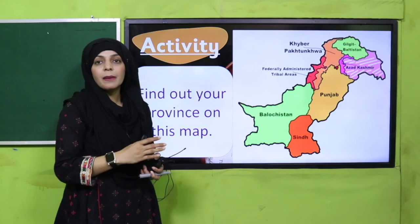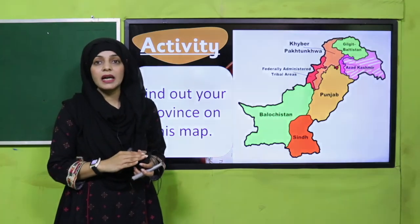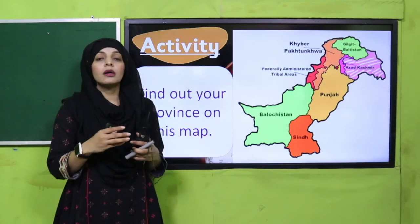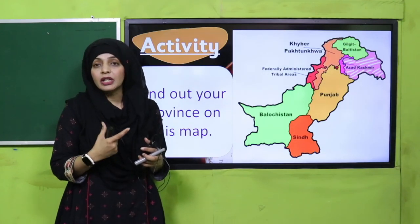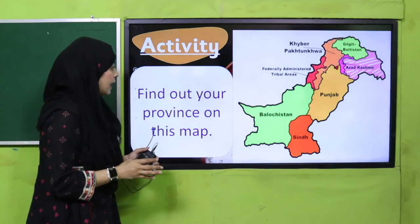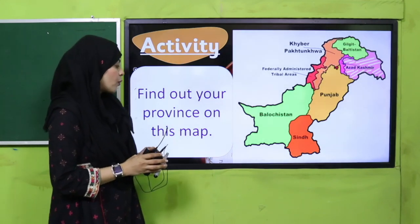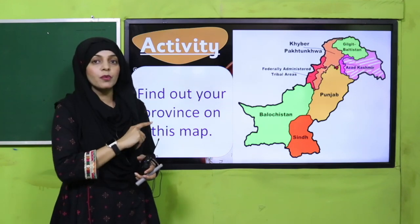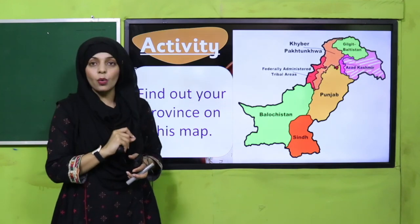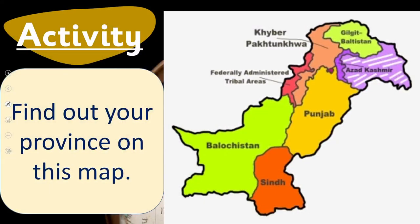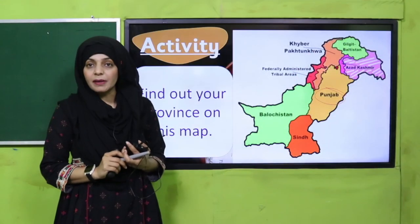Let's start with an activity. You can see a map on your screen. Teachers can also show a simple map from the book. The grade four book can also be used for revision. Show the students a map of Pakistan and find out your province on this map. There are different provinces written and labeled — find out your province.